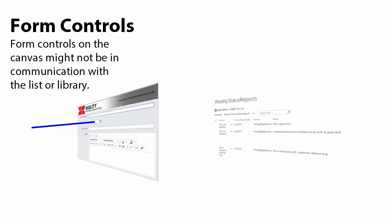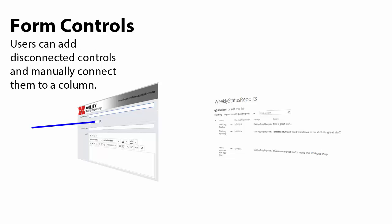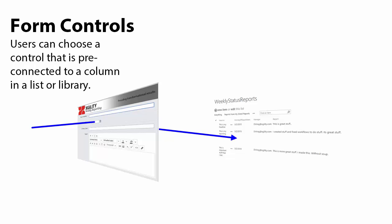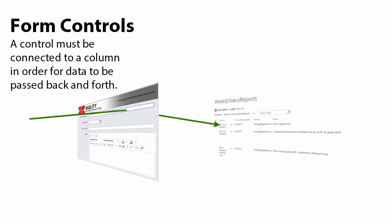It's important to understand that just because a control is on the form canvas does not mean that it's in communication with the list or library. Users can add disconnected controls to the form canvas and manually connect them to a column, or they can choose from a selection of controls that are pre-connected to the columns in the active list or library. A control must be connected to a column in a list or library in order for data to be passed back and forth.